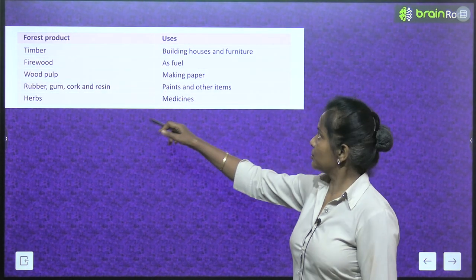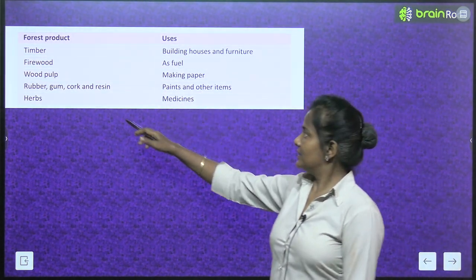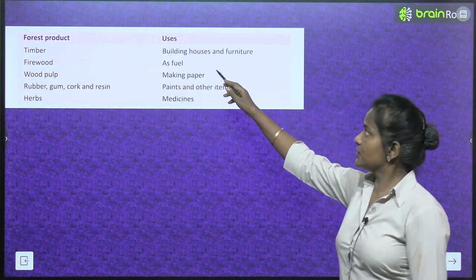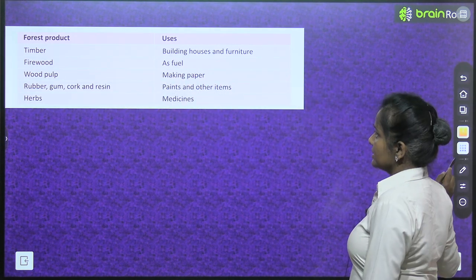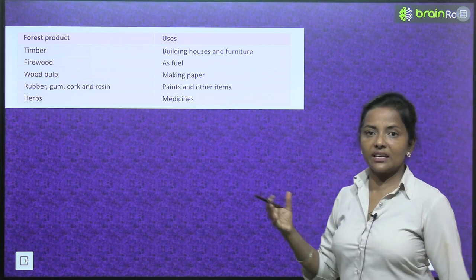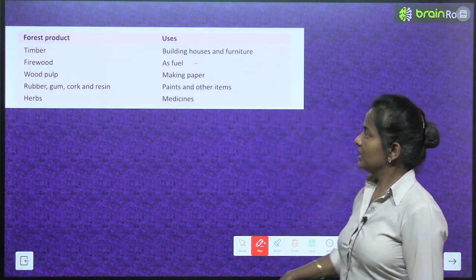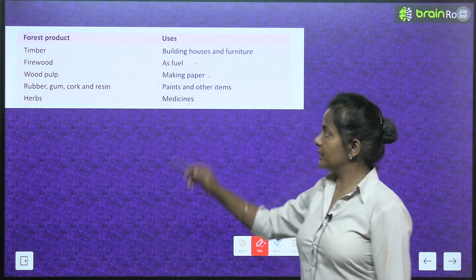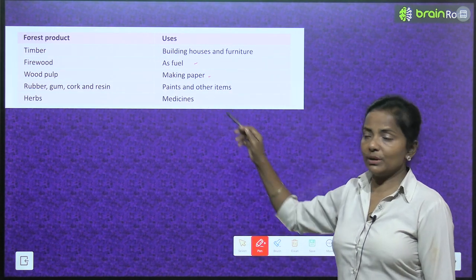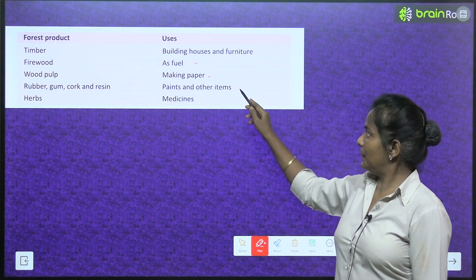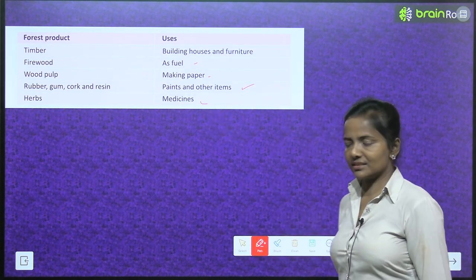Some forest products and their uses: timber is used for building houses and furniture. Firewood is used as fuel — hum jalane ke kaam lete hain firewood ko. Wood pulp is used for making paper. Other products include rubber, gum, caulk and resin, paints and other items, herbs and medicines.